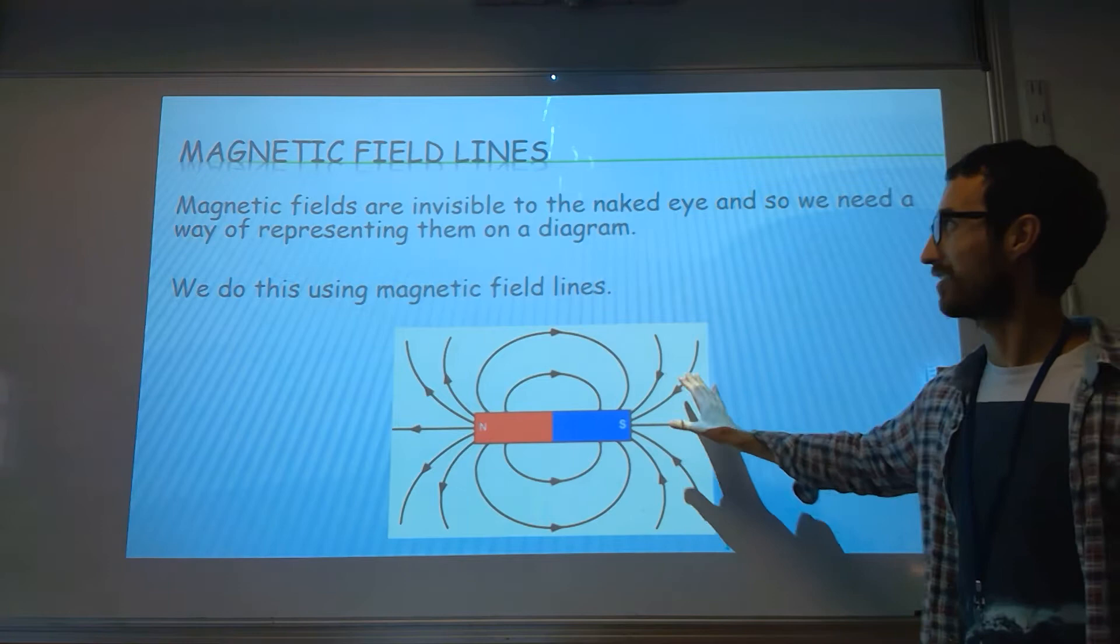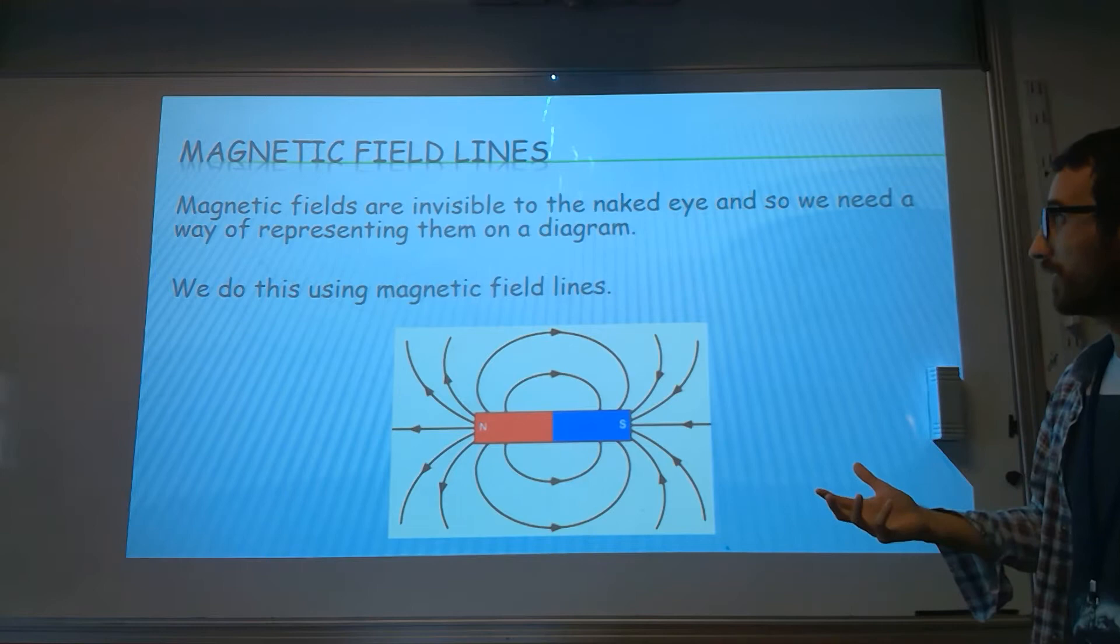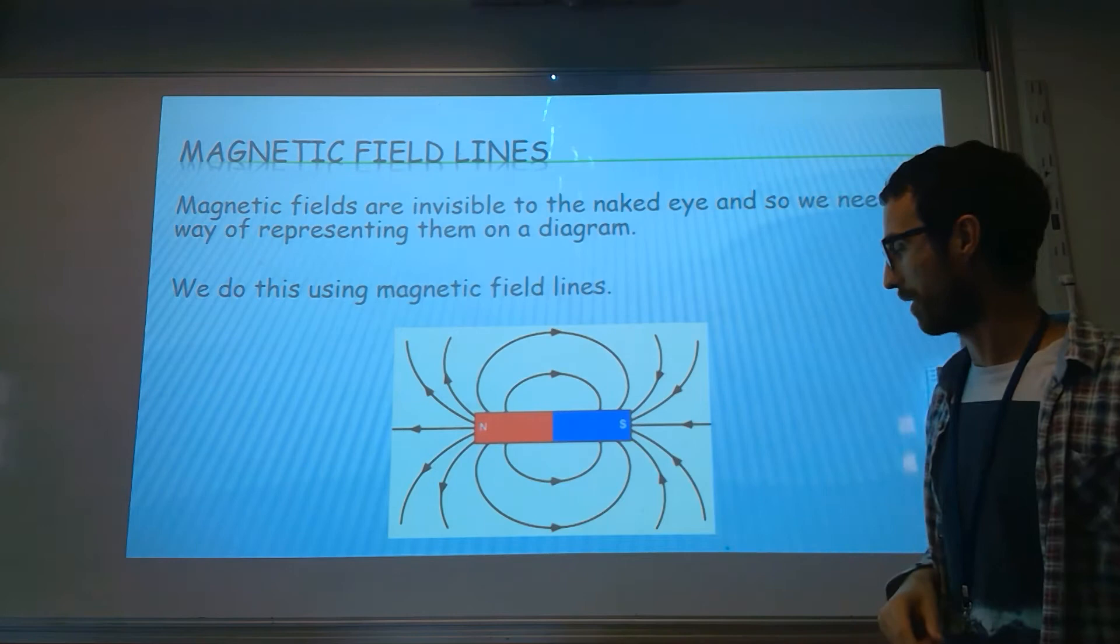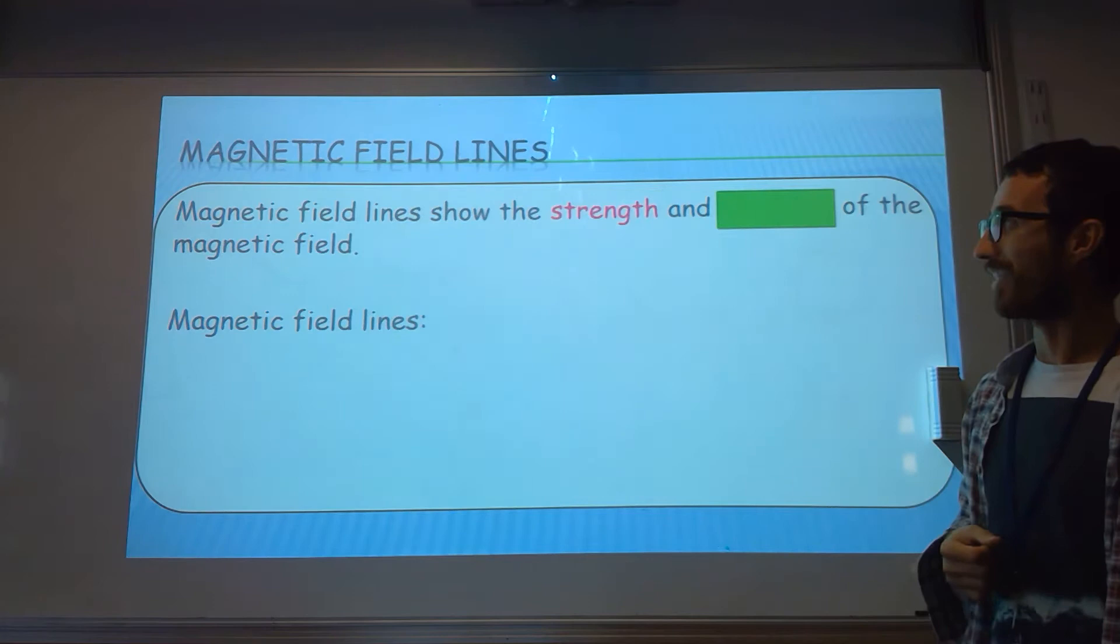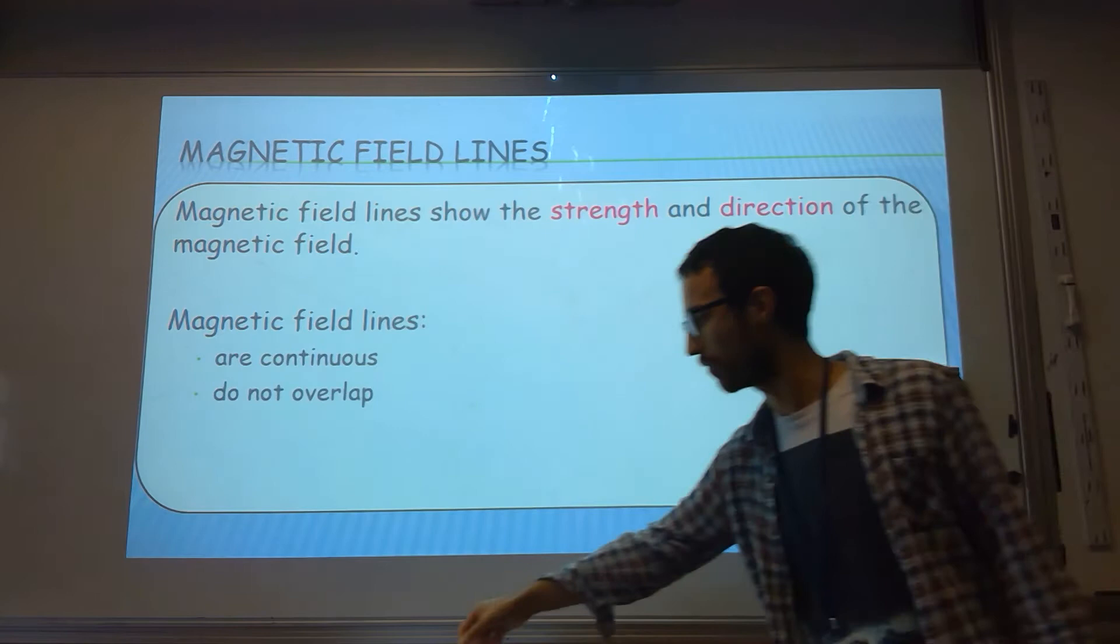If we look at the bar magnet shown here, you can see that this has a magnetic field around it. Now how do we represent that field? Well, we use field lines, and that's something we learned about when we did electric fields last topic. They're invisible to the eye, but we represent them by using these black lines here with arrows to show the direction. We'll talk about that in a minute. You know that shape already, hopefully.